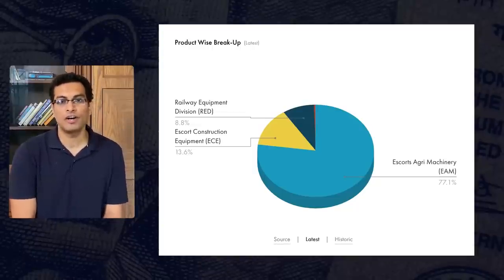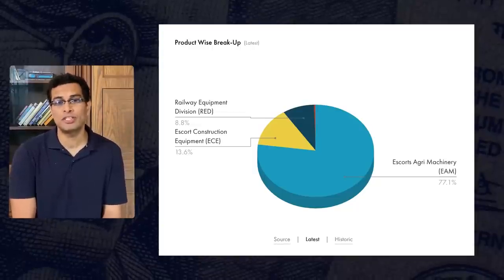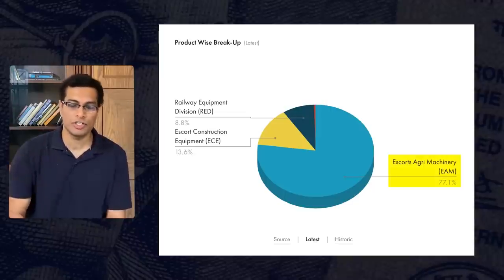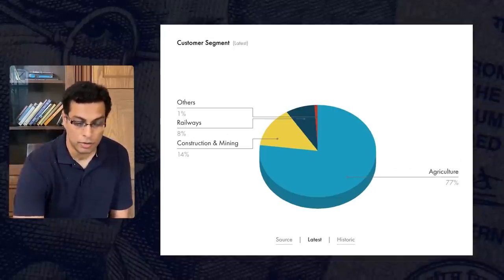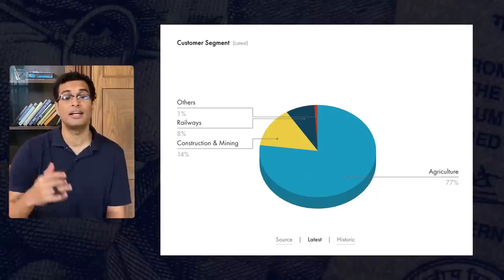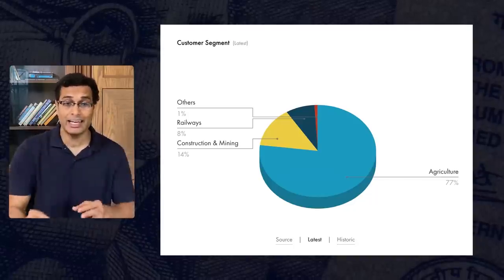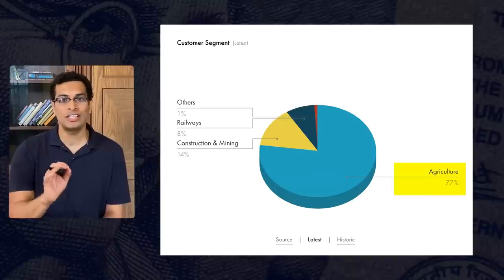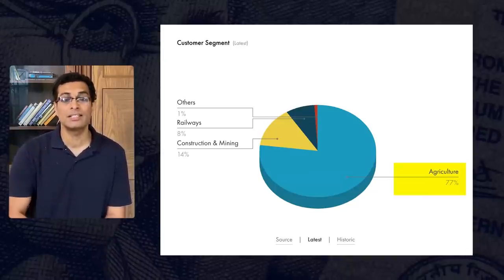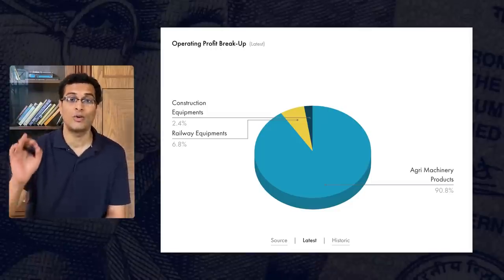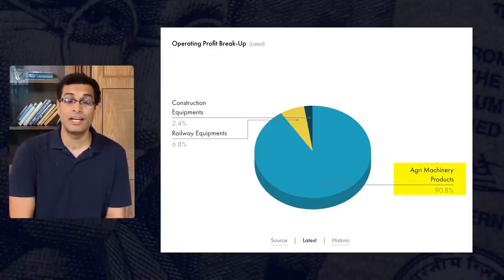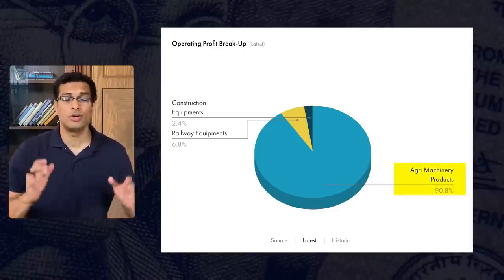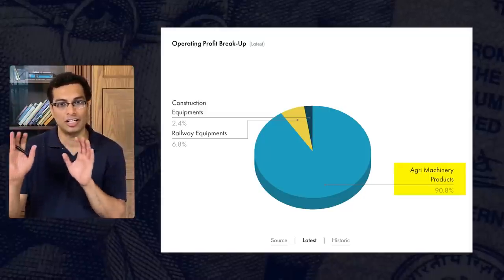Let me quickly show you the product-wise breakup of Escorts Kubota. You will notice that majority of their business, almost 77% comes from EAM, which is Escorts Agricultural Machinery. Point two, if you take a look at their customer segment, again, you will figure out that we are highly dependent on agriculture. Almost 77% of their customer base is into agricultural domain. Third point, if you take a look at their operating profit breakup, again, 90% of their money is made through agri-machinery sector.